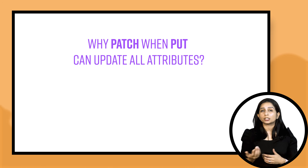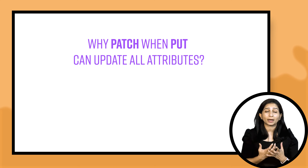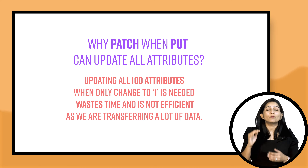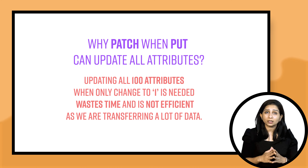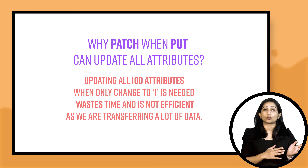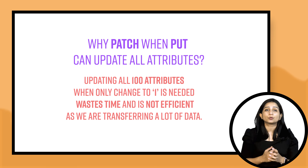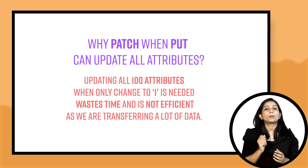This is the main use case of PATCH — sending only the changes or differences you want to apply. If you are sending all attributes anyway, you might as well use PUT. But if you have a use case of updating one or two fields, PATCH is the best way. Consider resources with hundreds of fields — it becomes cumbersome for the client to send the whole body again and again, and it slows down the request by transferring a lot of data. Just sending two attributes instead of a hundred makes your APIs faster and more efficient. That is why PATCH methods are used.